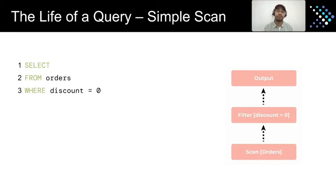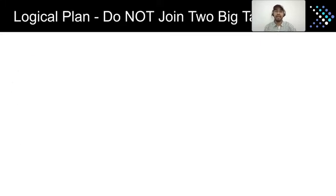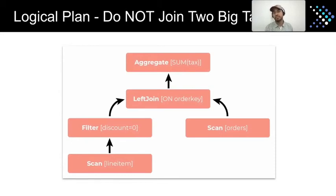Let's take a look at the life of a query. Here is a simple query — select star from the orders table with a simple predicate. In the explain plan, you can see different operators: the scan operator reads data from the orders table, a filter is applied, and then output is returned to the client. For a more involved query with projections, an aggregate like sum, a left join on the line item and orders tables on order key, a where clause, and group by — the plan shows a scan on line item, filter, scan on orders, left join, aggregation, projections, and results returned to the client.